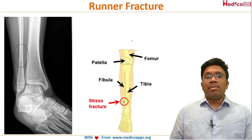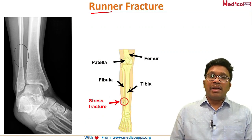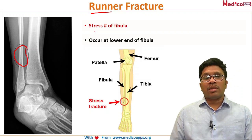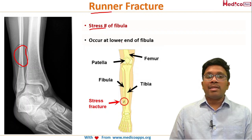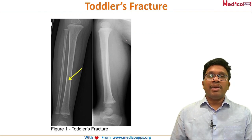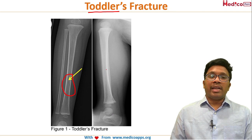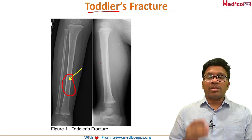A runner fracture is a stress fracture of the distal third of the fibula caused by repetitive injury, treated by immobilization and rest. A toddler's fracture is an undisplaced distal third tibia fracture in a child, treated by plaster of Paris application.